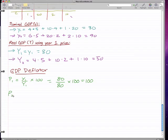And for year 2, the GDP deflator is again little y2 over big Y2 times 100, and that is 90 over 50 times 100, and that'll work out to 180.